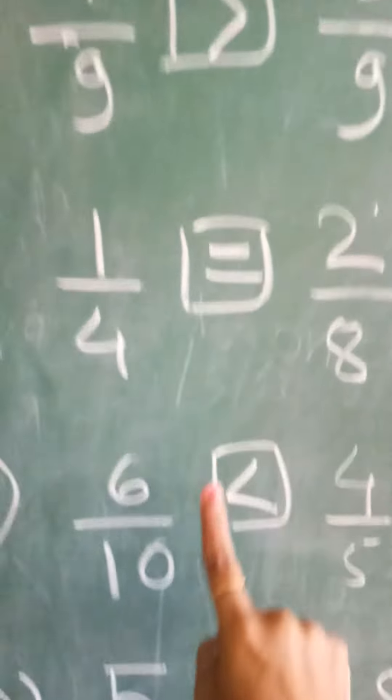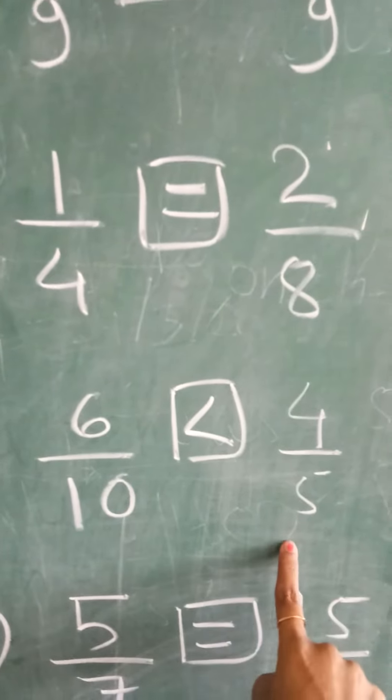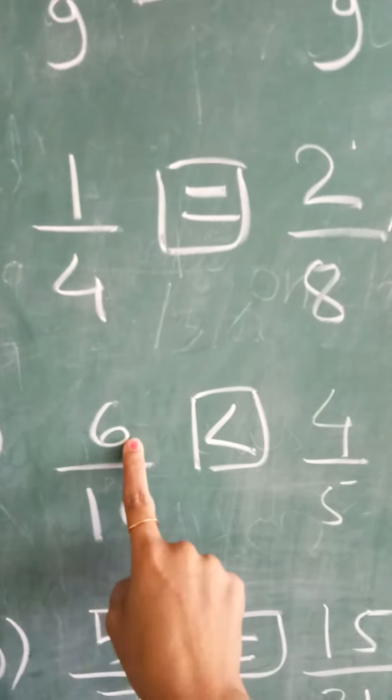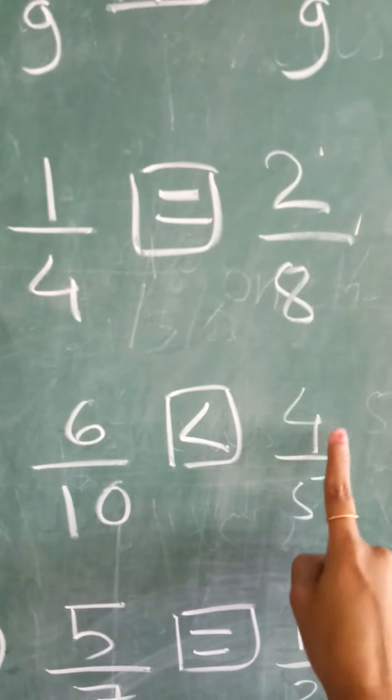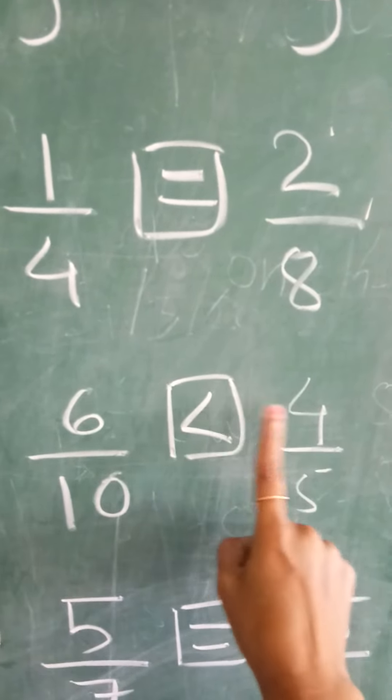6 upon 10, 4 upon 5. Again cross multiply: 5 sixes are 30, 10 fours are 40. 40 is on this side, so the greater sign will be on this side.